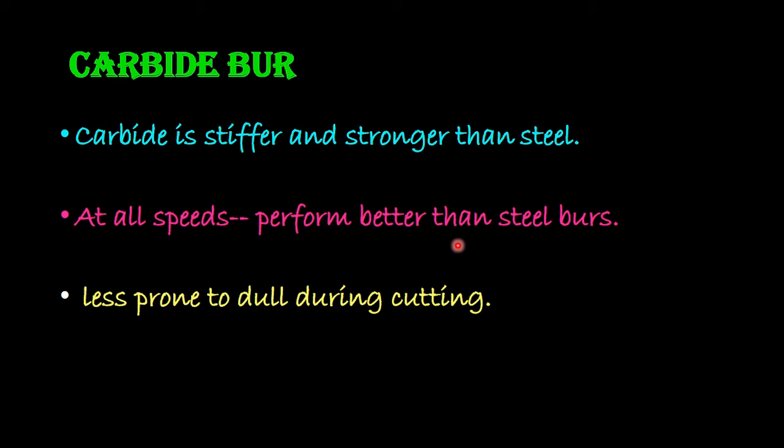How are these burs made? This carbide bur or tungsten carbide bur are the product of powder metallurgy, a process of alloying in which complete fusion of the constituents does not occur.